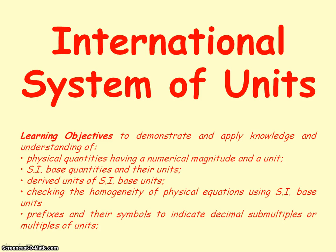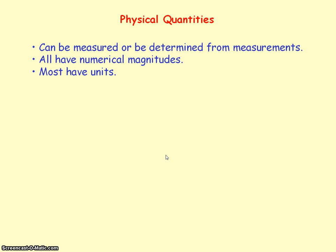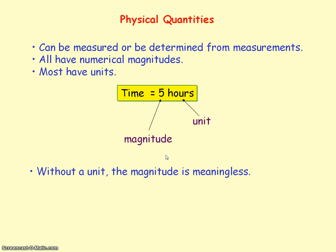We're going to be looking at physical quantities and their scientific units. Physical quantities can be measured or determined from measurements, and so they all have numerical magnitudes and values. A few do not have units — for example, efficiency — but most have units. An example of a physical quantity would be time, measured as five hours, where five represents the magnitude and hours represents the unit. It's important to give a unit, because otherwise the magnitude will be meaningless.